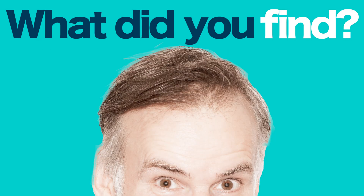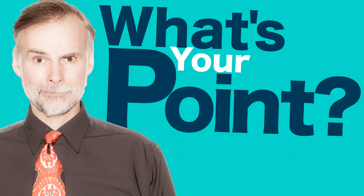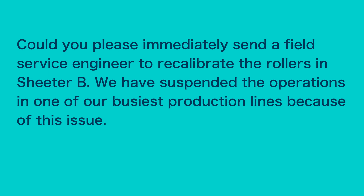Next comes the description of the box and whisker plots, highlighting key findings from your quality control check for sheeters A and B. Sheeter A largely performed within our manufacturing specifications from 9 to 10 millimeters, with a median value of 9 millimeters, whereas 75% of the measurements taken from sheeter B were too thin. Now comes your call to action — could you please immediately send a field service engineer to recalibrate the rollers in sheeter B? We have suspended operations in one of our busiest production lines because of this issue.